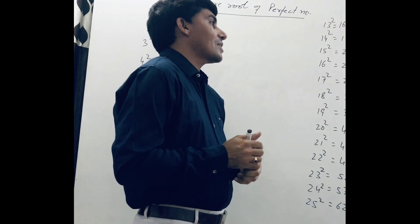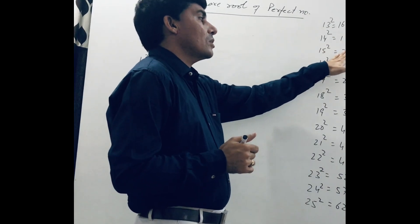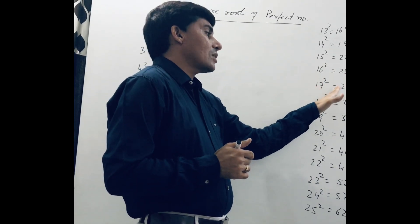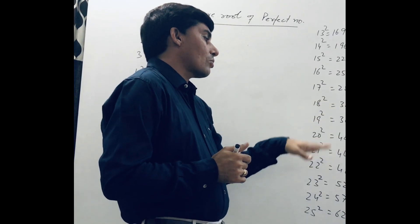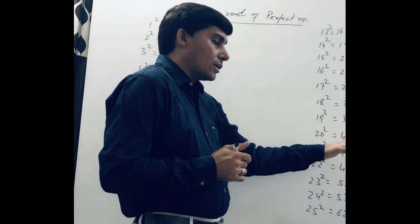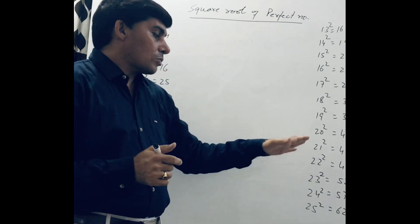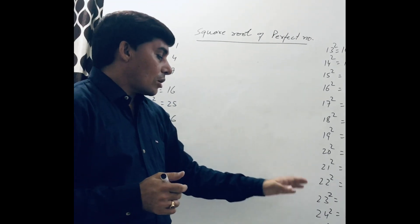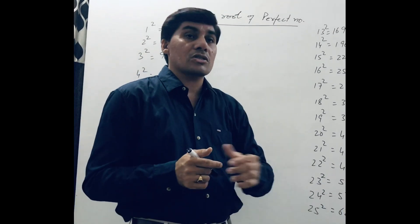The square of 13 is 169, the square of 14 is 196, the square of 15 is 225, the square of 16 is 256, the square of 17 is 289, the square of 18 is 324, the square of 19 is 361, the square of 20 is 400, the square of 21 is 441, the square of 22 is 484, square of 23 is 529, square of 24 is 576, and square of 25 is 625.